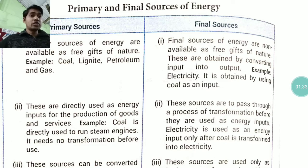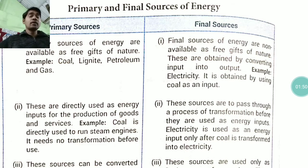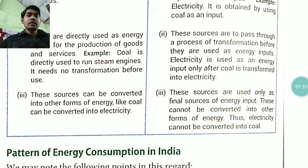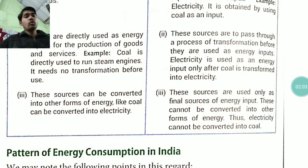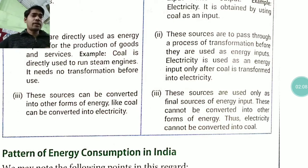Coal is used as energy input only after it is transformed into electricity. Primary energy resources can be passed through a process of transformation and converted into another form of energy.